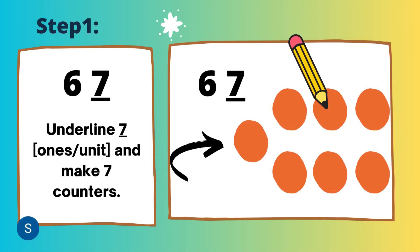Let's repeat the activity with another number, that is 67. Step 1: First, underline the number that represents ones or units and make counters. You can see number 7 is underlined, and we have made 7 counters.